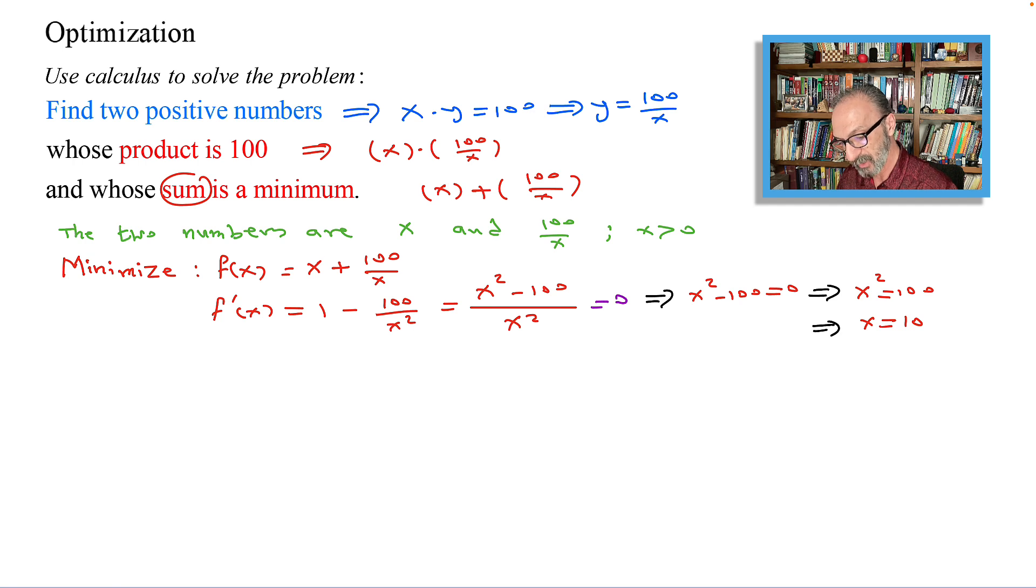For f prime to be zero, f prime of x to be zero, we found that x has to be 10. That means x equals 10 is the only critical number that we have.